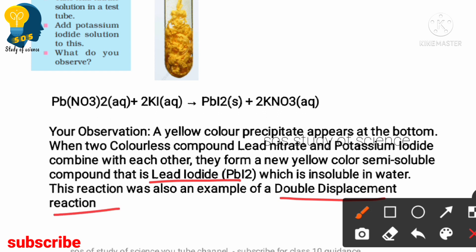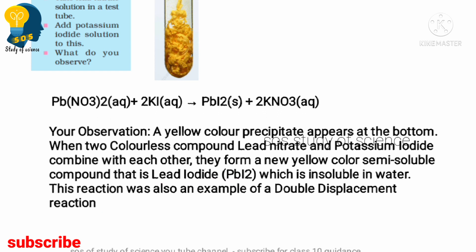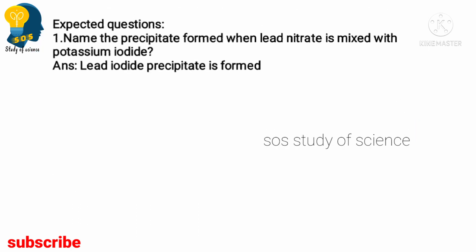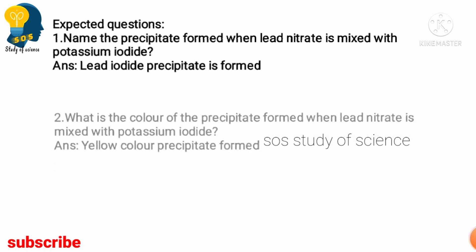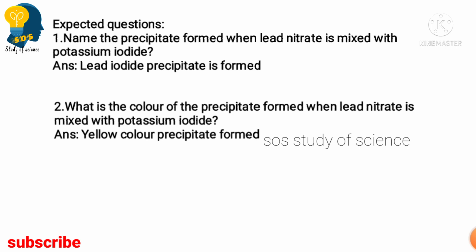Some expected examination questions: First, name the precipitate formed when lead nitrate is mixed with potassium iodide. The answer is lead iodide. Second, what is the color of the precipitate formed when lead nitrate is mixed with potassium iodide?